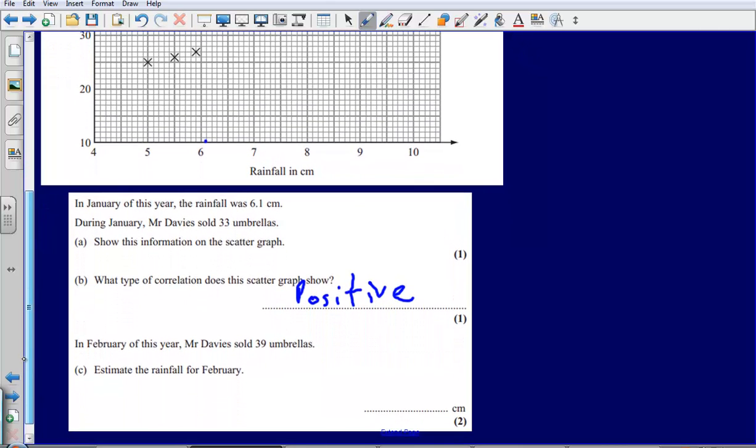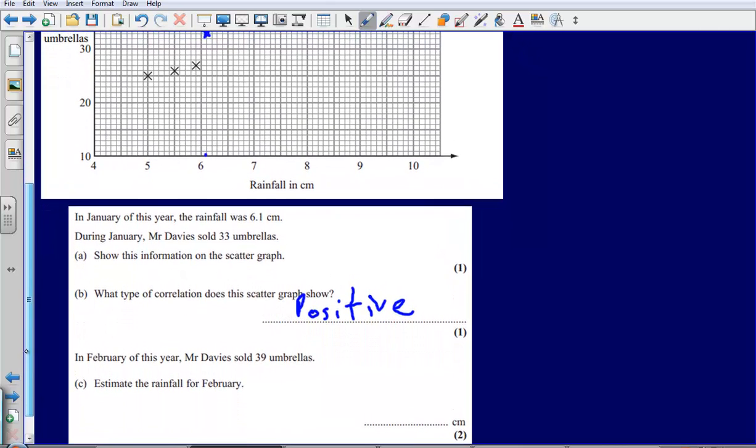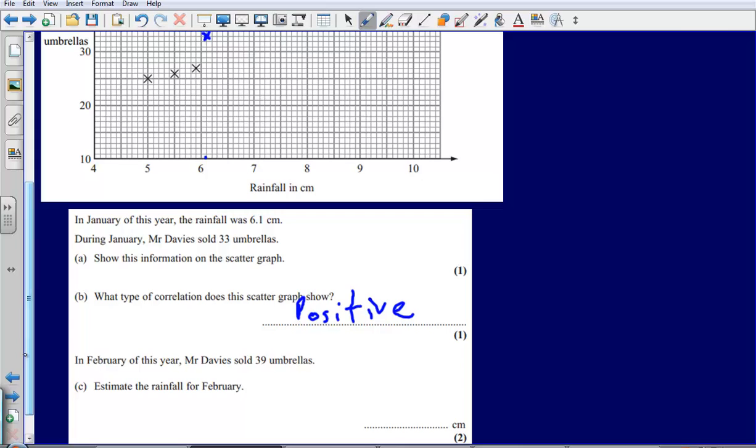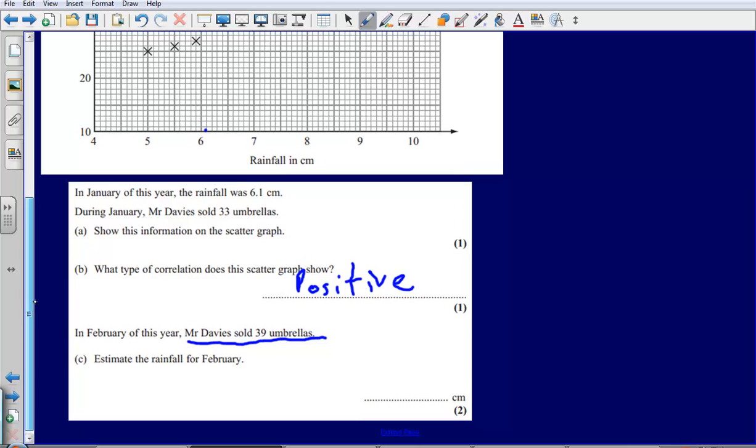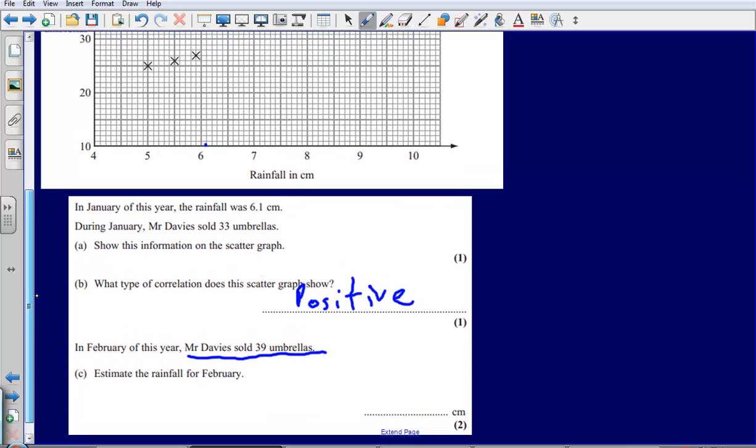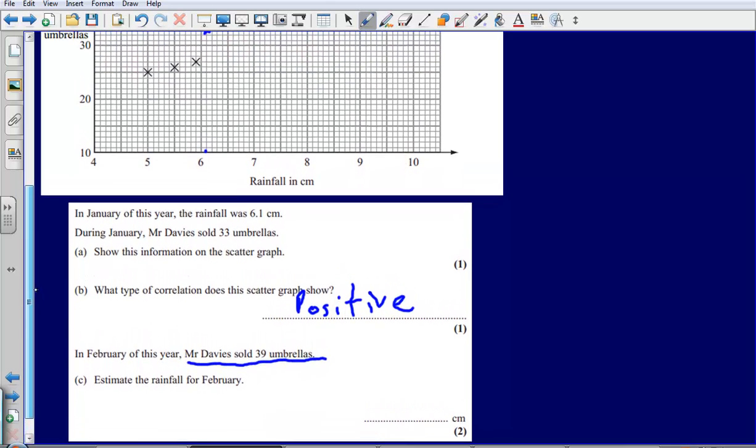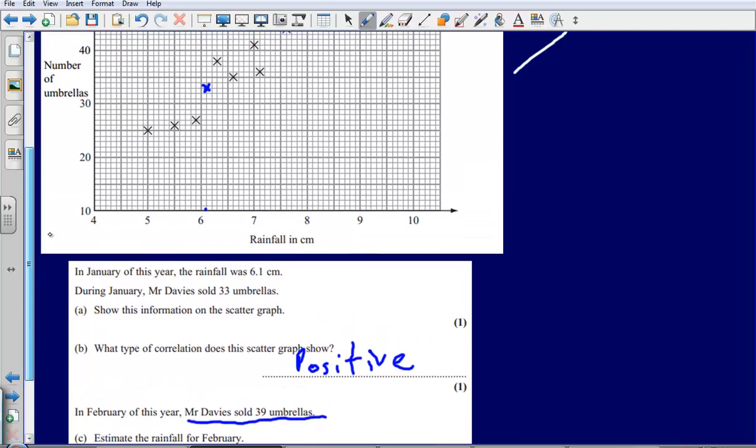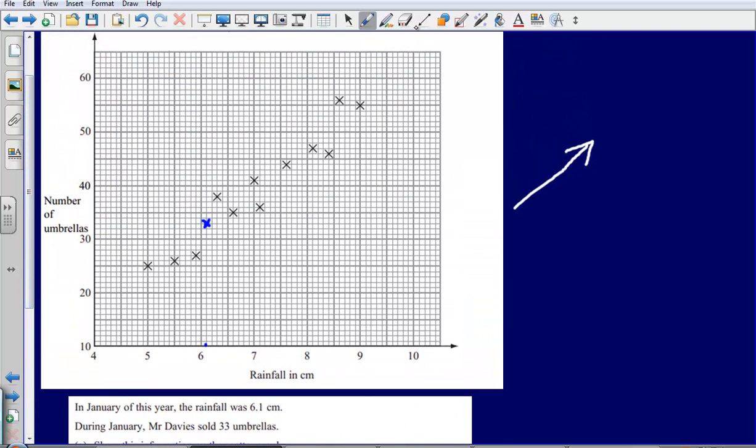Then part C says to estimate the rainfall for February given that Mr. Davis sold 39 umbrellas. So again notice here it doesn't ask us to draw a line of best fit. Sometimes it will, sometimes it won't. It hasn't here, but that makes no difference to us, we're still going to draw one. It helps us to make an estimate and answer that question.